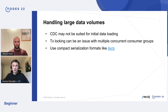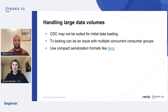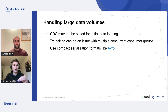Transaction locking can also be an issue. With multiple instances of the plugin writing to Neo4j at the same time, heavy workloads may cause locking issues when updating the same nodes. The Neo4j Kafka plugin has a retry mechanism to handle that, but you may need to tune the configuration to limit concurrency, or address this in your data model.